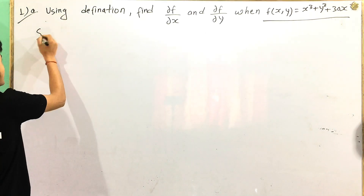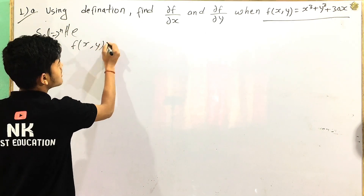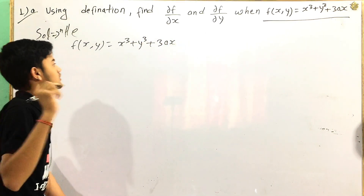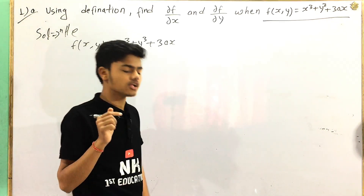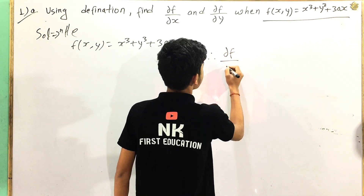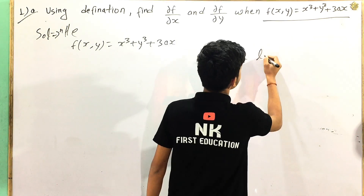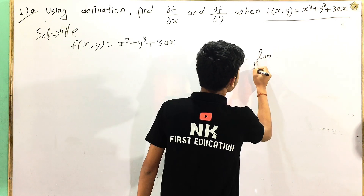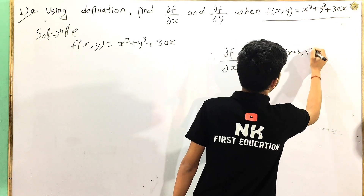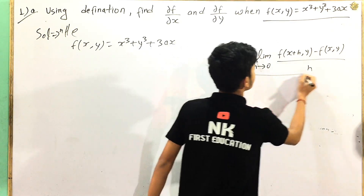So, solution. The function is f(x, y) = x cube plus y cube plus 3ax. We are going to use the definition. Using definition, del f by del x — note that del f by del x is equal to the limit as x tends to 0 of [f(x+h, y) minus f(x, y)] divided by h.